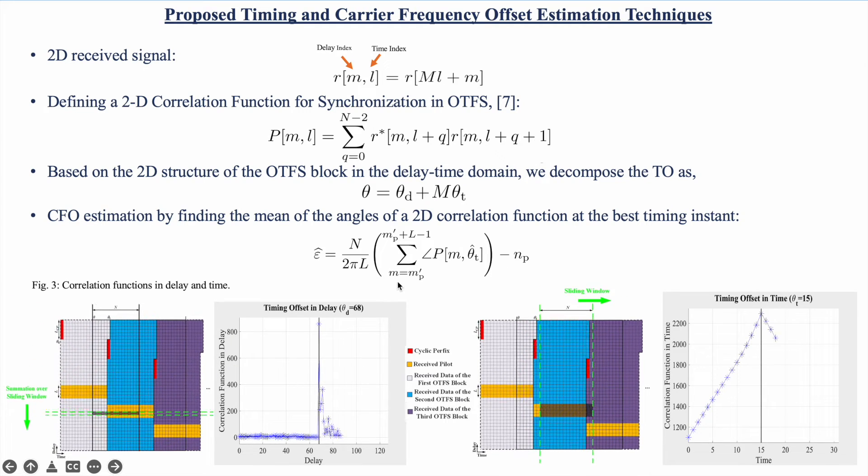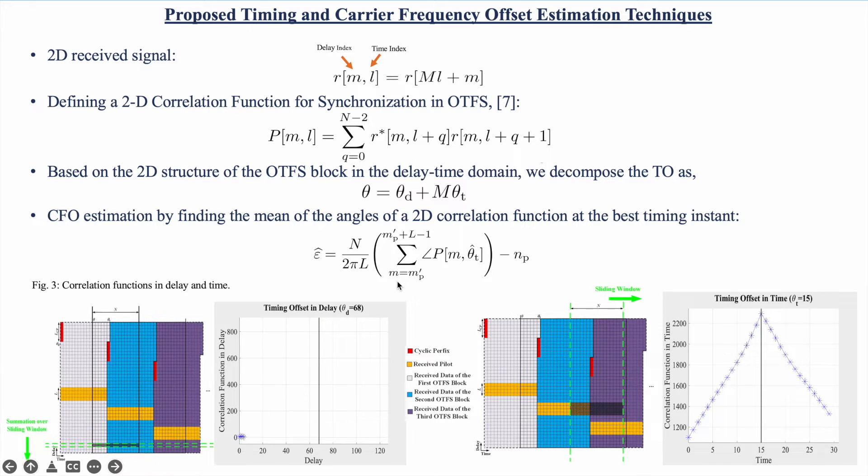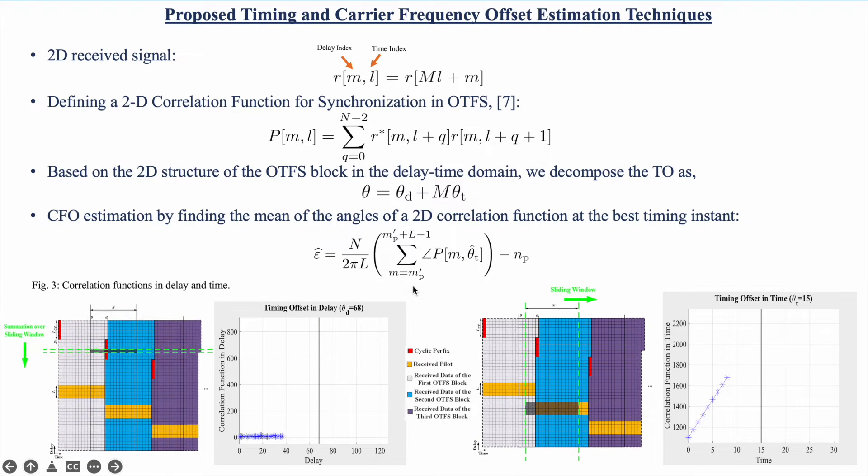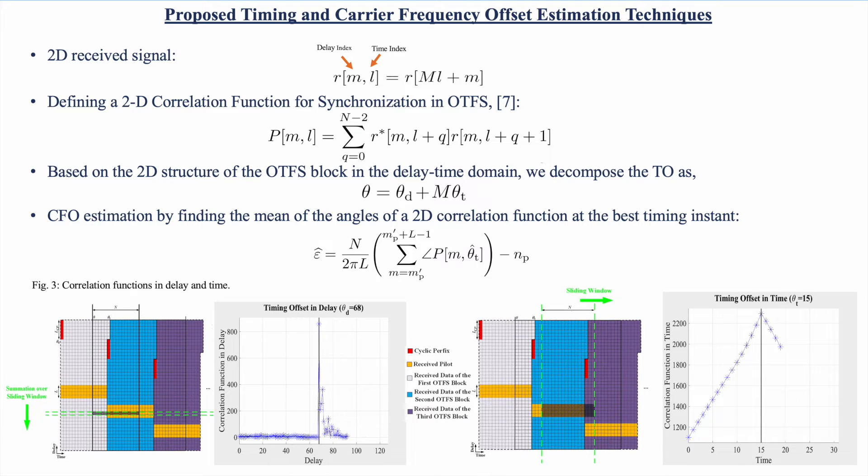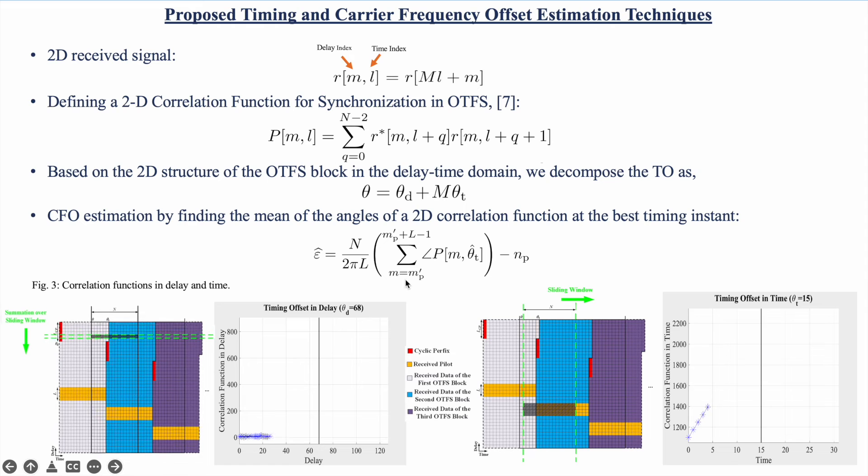We exploit the multipath diversity of the channel to improve the accuracy of the timing offset in time. In the same manner, we exploit this multipath diversity to improve the accuracy of the estimation of the CFO.